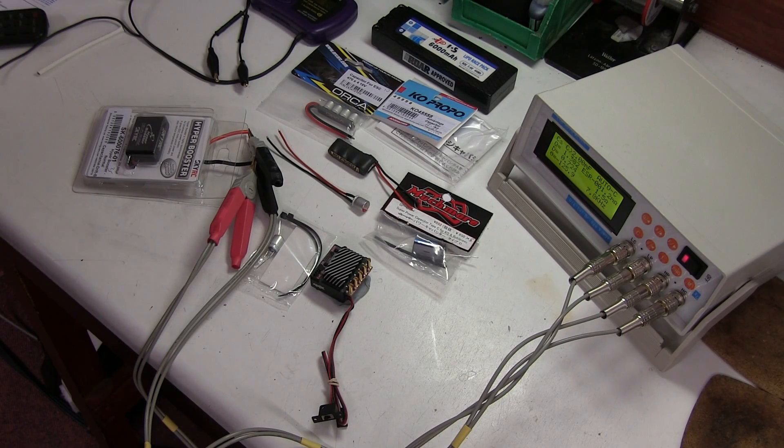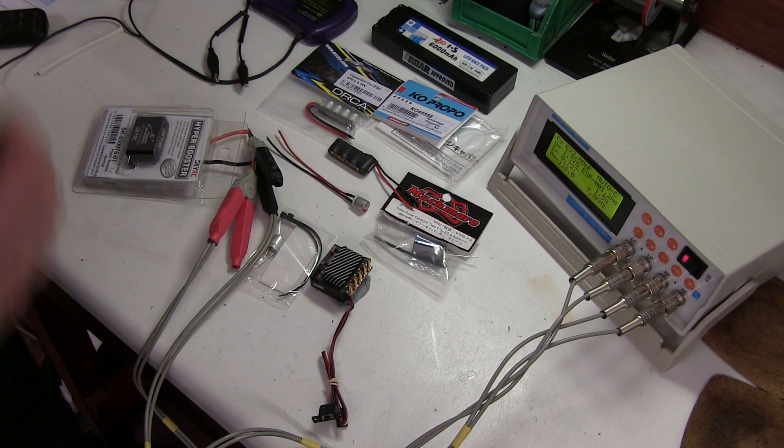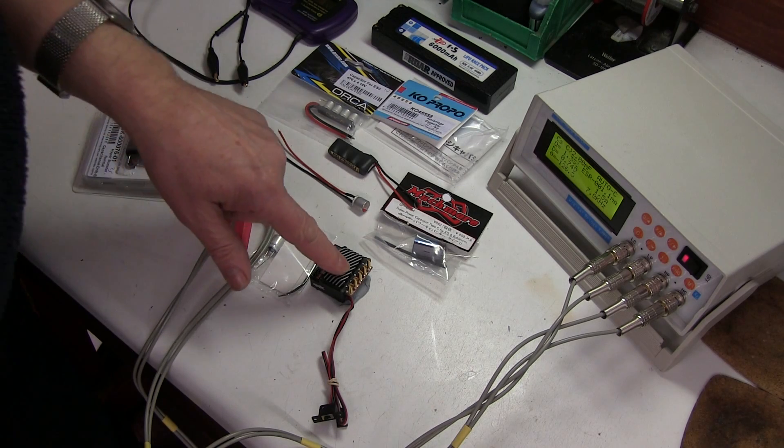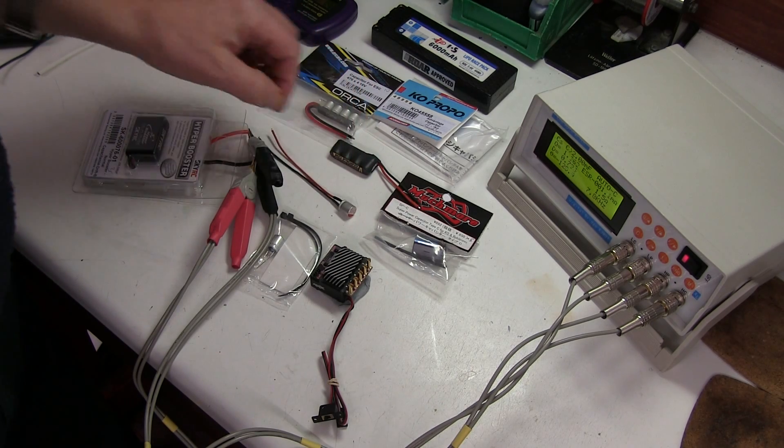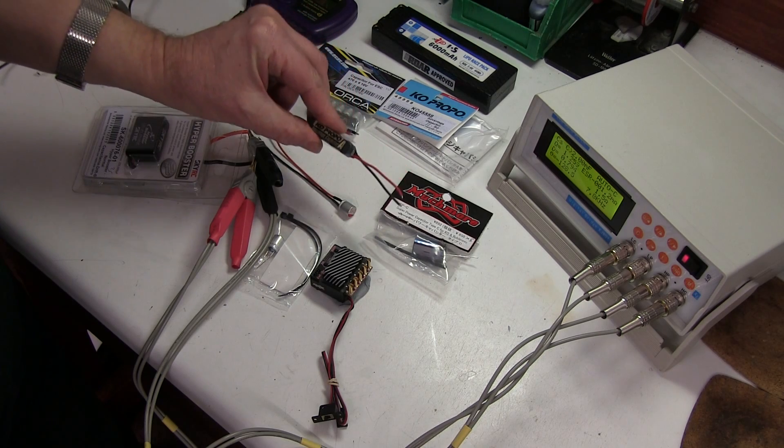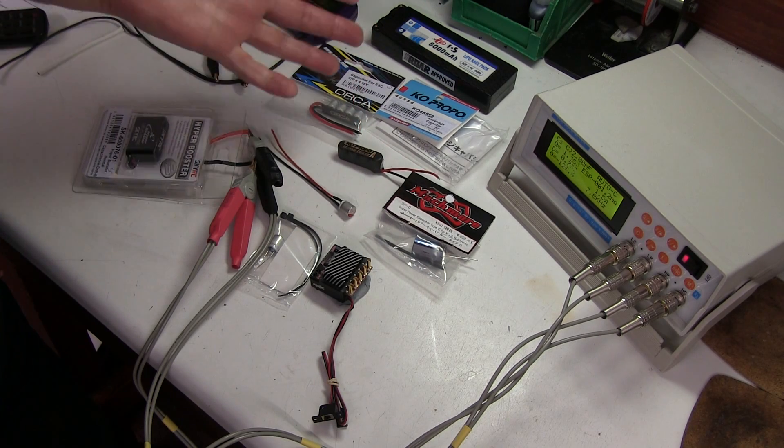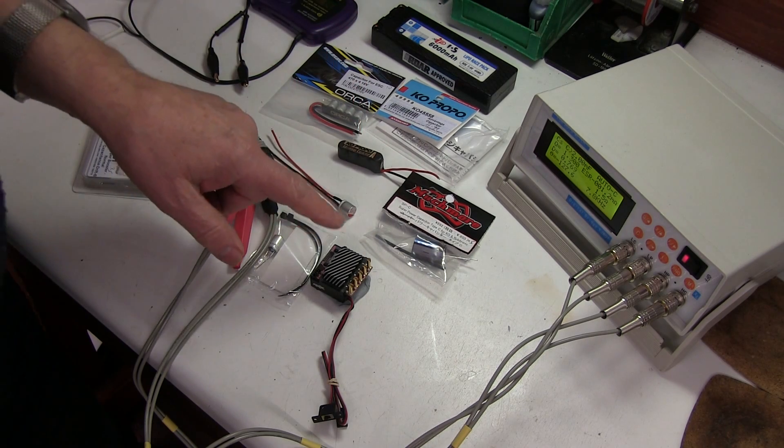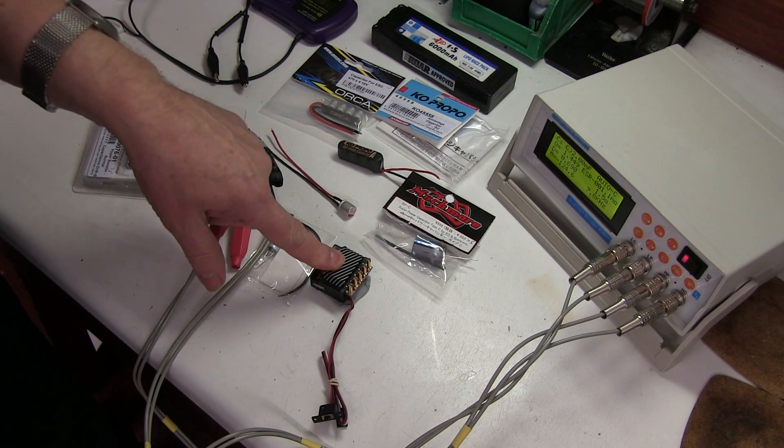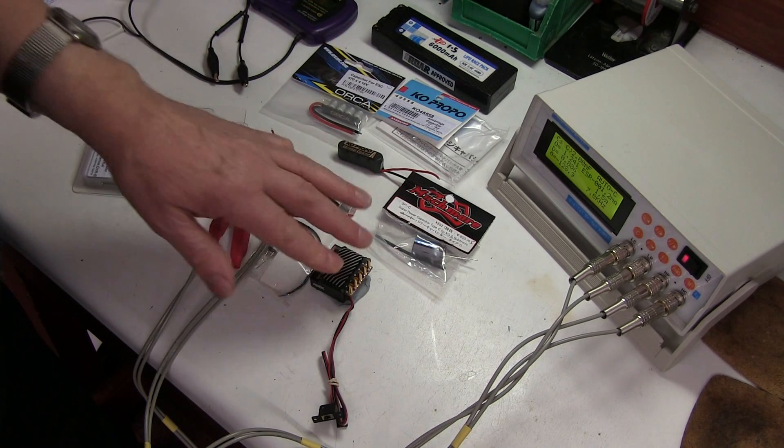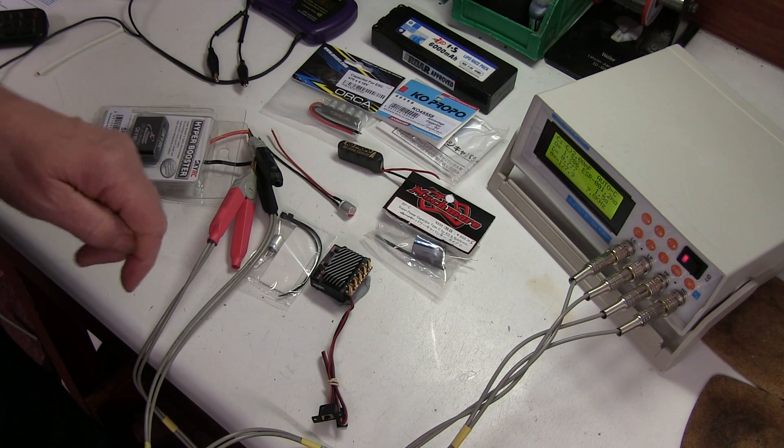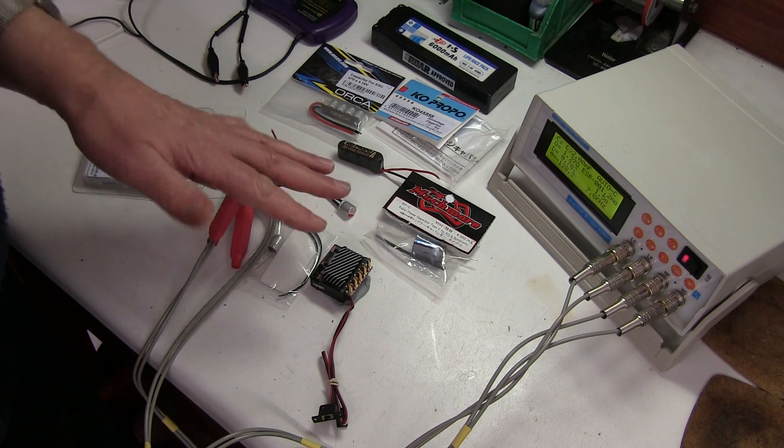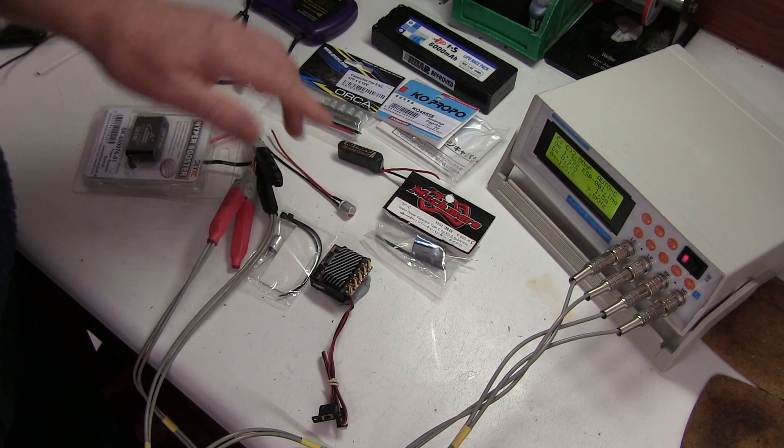This is a video about capacitors that are used on brushless speed controls, what they're for, and whether you need to put a bigger one on or whether you need them at all. Brushless DC speed controls use a switching technique which pulses the motor with current and this causes a lot of variation in the voltage that you're drawing from a battery.